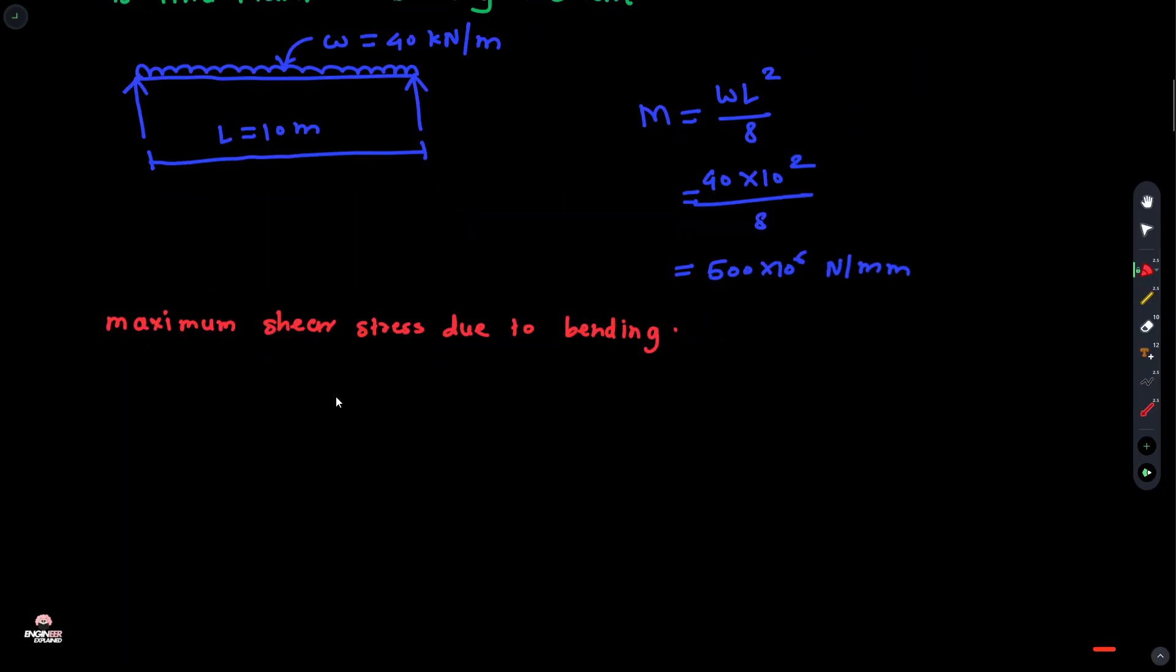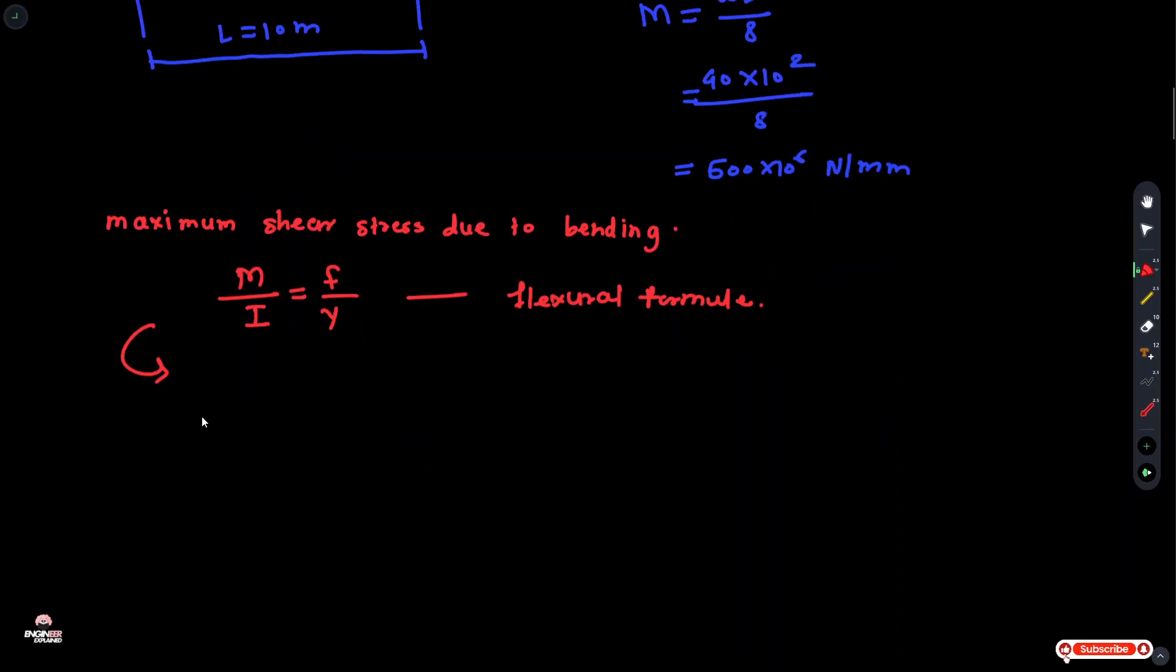I value is 327.95 × 10⁶. We have the flexural formula M/I equals F/Y. Rearranging this formula, we get F equals M/I × Y.